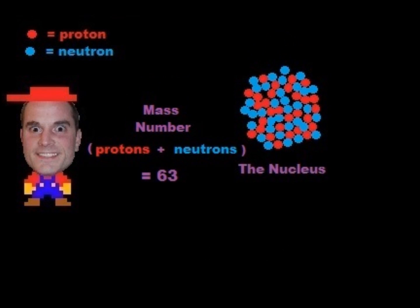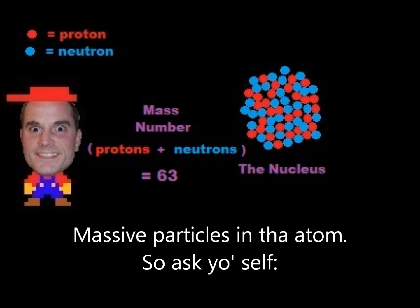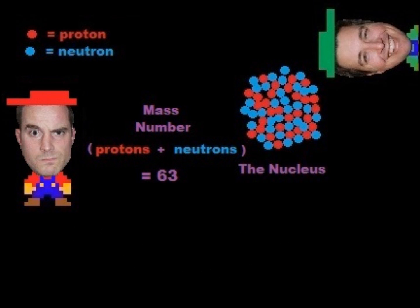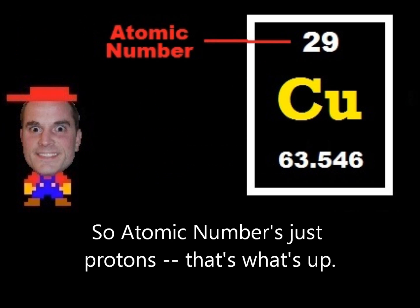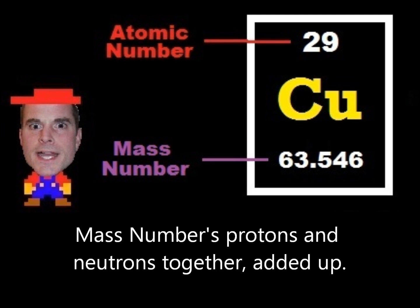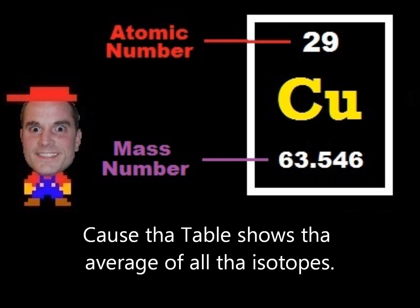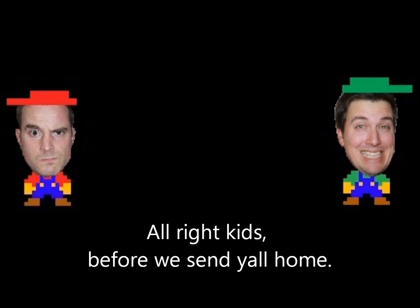Mass number is different — it counts something else: massive particles in the atom. So ask yourself: what are the particles that do have mass? If you said protons and neutrons, you're ahead of the class. Atomic number is just protons — that's what's up. Mass number is protons and neutrons together — add it up. Why are there fractions? Shouldn't the number be whole? Because the table shows the average of all the isotopes.